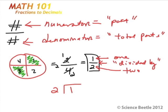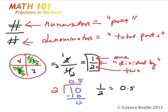Sure enough, we can. We just do regular division. How many times does two go into one? Zero times. We put a decimal point to denote the number will be less than one, then add a zero underneath. How many times can two go into ten? Five times two is ten. Since there's no remainder, we stop here. So one-half is equivalent to 0.5.